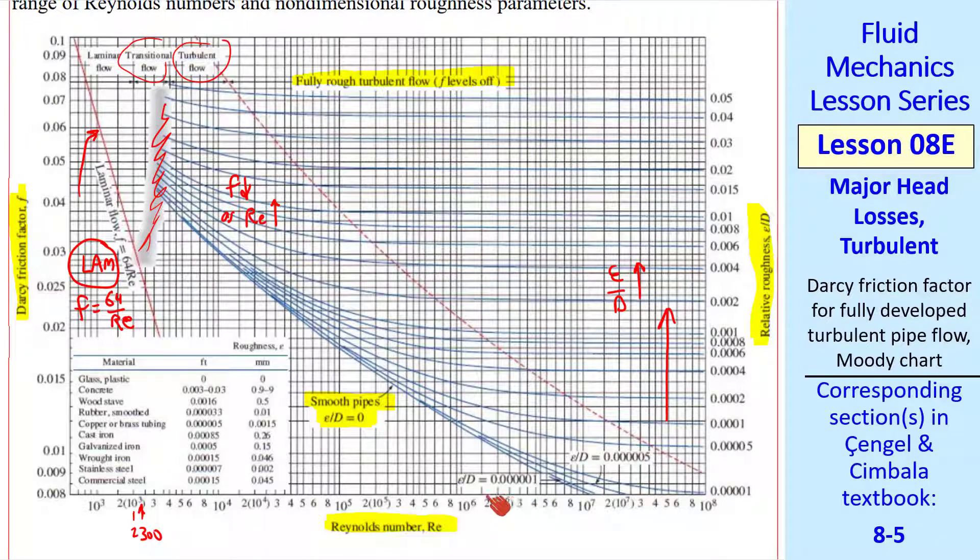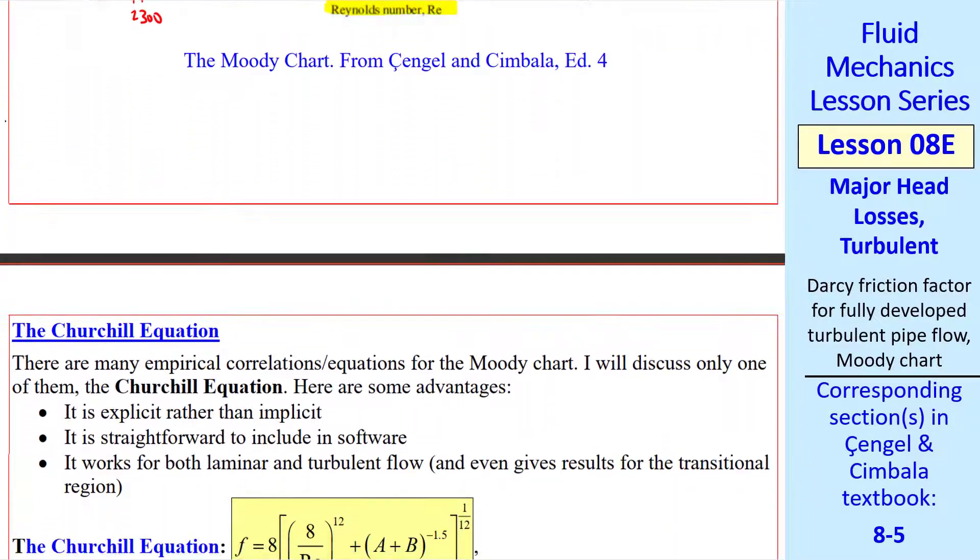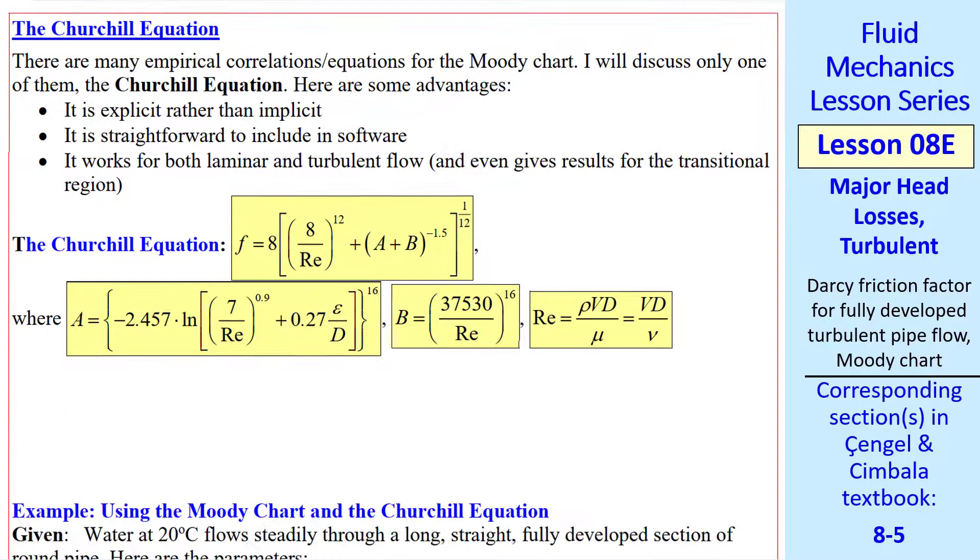In the old days before computers, we had to calculate our Reynolds number and our roughness and use this chart to find the Darcy friction factor. But it's a lot easier now to just plug in an equation. There are several correlations that have been generated through the years. I'm going to talk about only one, the Churchill equation.